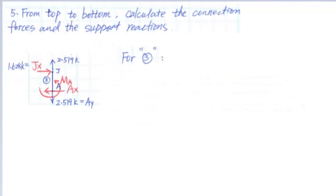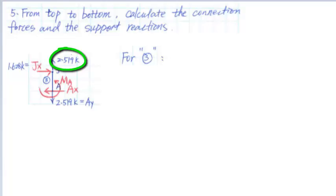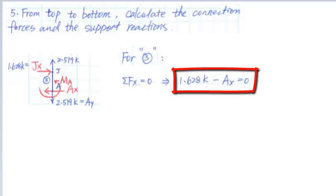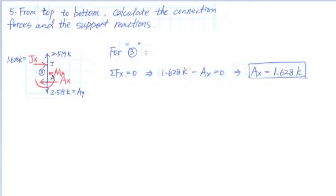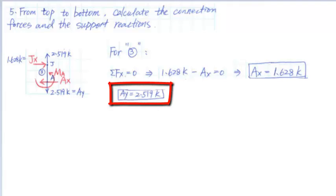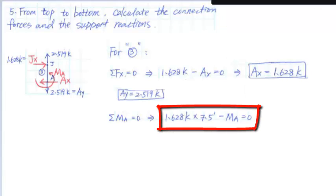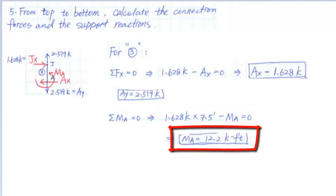For member 3, JX equals 1.628 kips and JY equals 2.519 kips, with three unknown reactions at support A. Summing forces in the X direction: 1.628 kips minus AX equals 0, so AX equals 1.628 kips. Summing forces in the Y direction: 2.519 kips minus AY equals 0, so AY equals 2.519 kips. Summing moments at point A, assuming clockwise positive: 1.628 kips times 7.5 feet minus MA equals 0, giving MA equals 12.2 kip-feet.